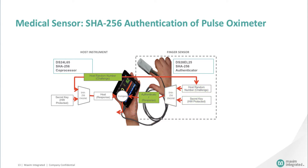The host microcontroller or FPGA saves the response as the device response. It then sends the same random number or challenge to the coprocessor within the host system. The coprocessor takes that random number, combines it with a secret key and other data, then generates a MAC using its SHA-256 engine. The host microcontroller or FPGA compares the host response with the device response. If these match, the device is authentic; if not, the device is disabled.